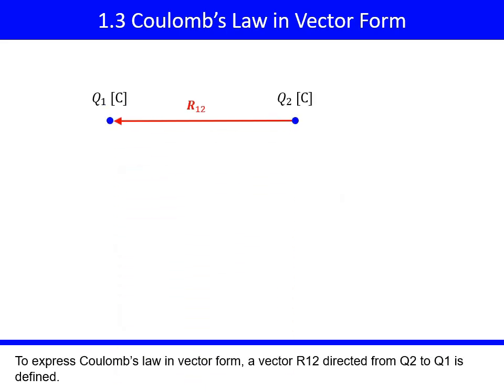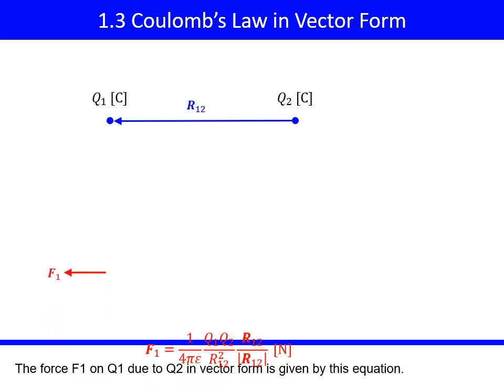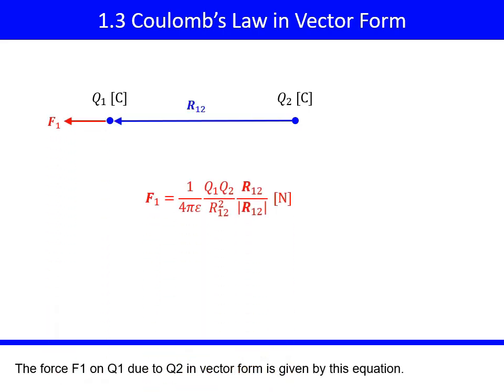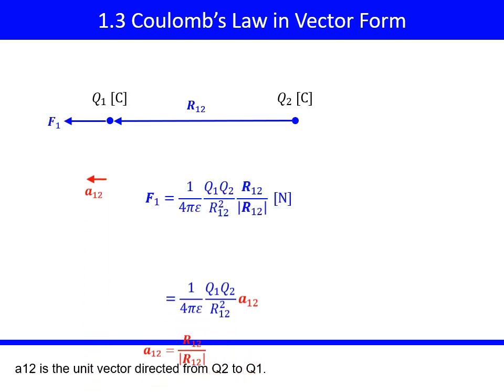To express Coulomb's Law in Vector Form, a vector R12 directed from Q2 to Q1 is defined. The force F1 on Q1 due to Q2 in Vector Form is given by this equation. A12 is the unit vector directed from Q2 to Q1.